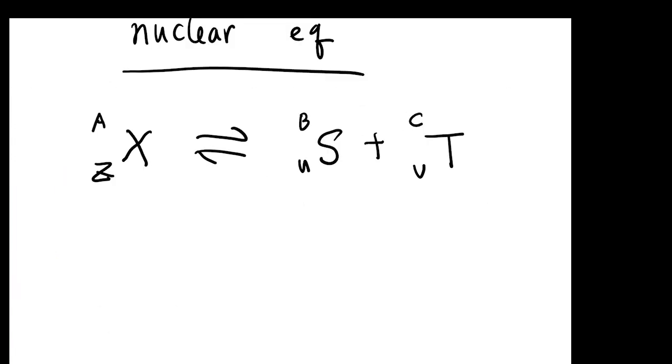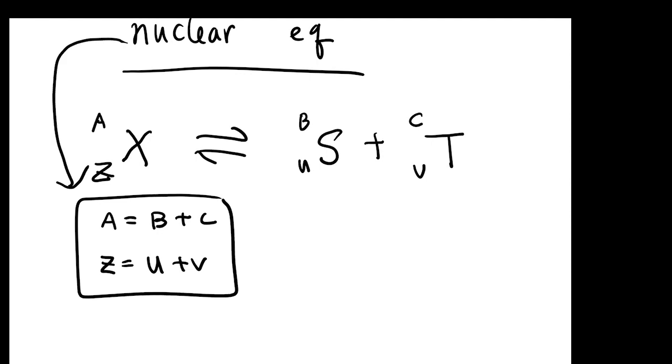Assuming your atom undergoes a decay, produces some other species, let's call them S and T. Then one thing that needs to be always, always true is that A has to be the sum of B and C. Z has to be the sum of U and V. This has to be true all the time when you write out these equations.